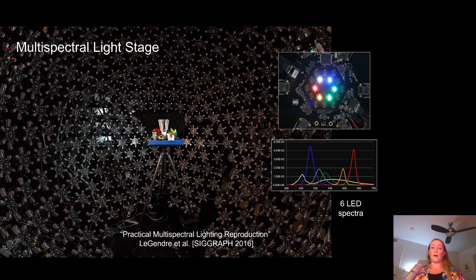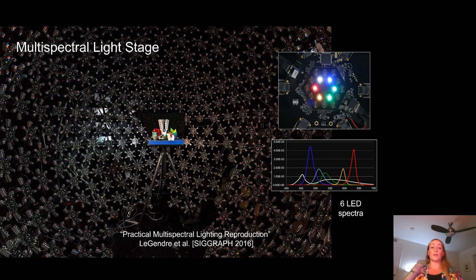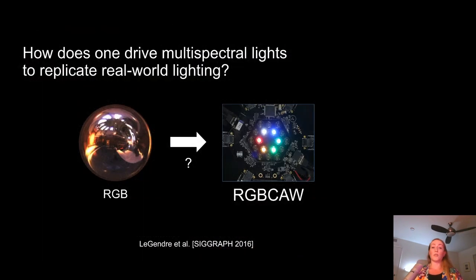You can see the stage here, peering into it using a wide-angle lens. This stage added amber, cyan, as well as broad-spectrum white LEDs to the original red, green, and blue of a lighting reproduction system to fill in spectral gaps, inspired by Wenger et al. Each hexagonal star cluster is a custom-built circuit board driving the different channels of LEDs. At work presented at SIGGRAPH in 2016, we tried to answer the question: how does one drive multi-spectral lights to replicate real-world lighting, and in particular how does one use three-channel RGB light probes to drive multi-spectral lights with six or more spectral channels?